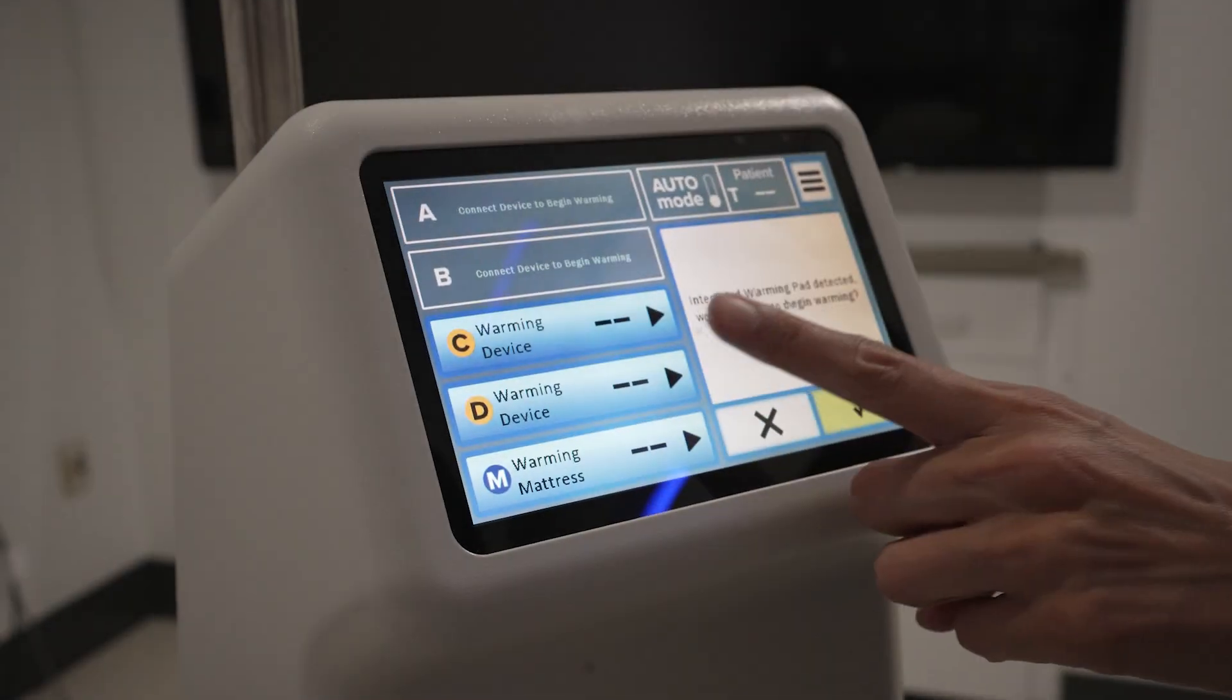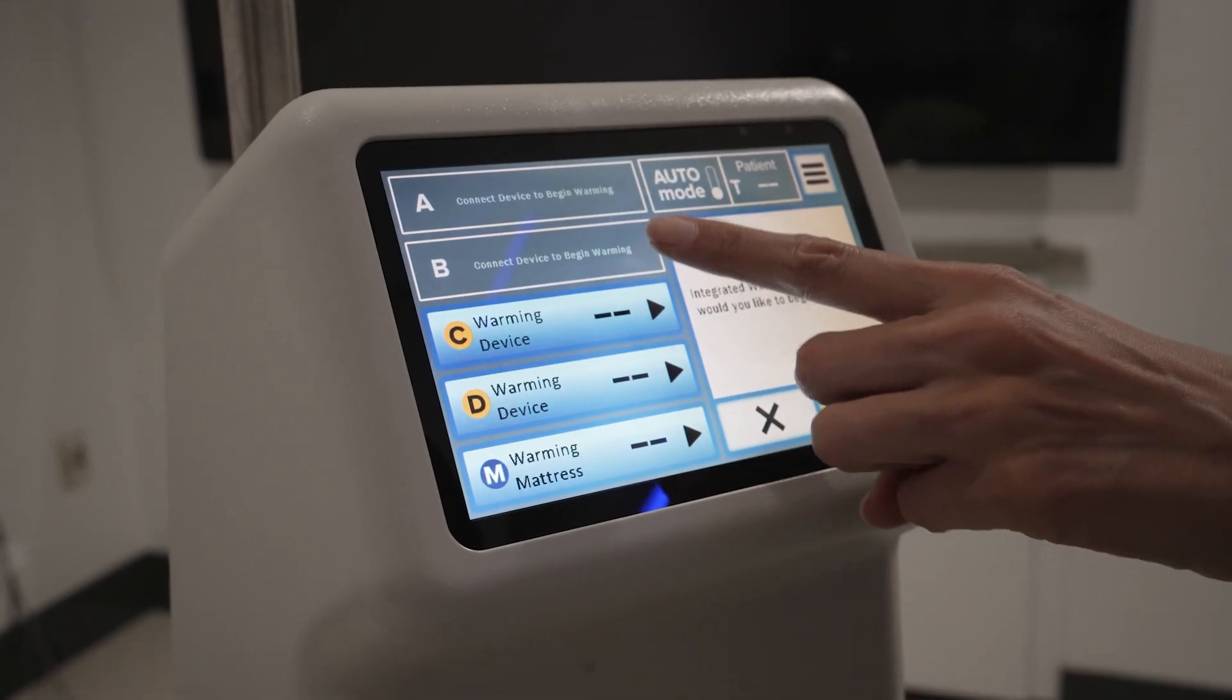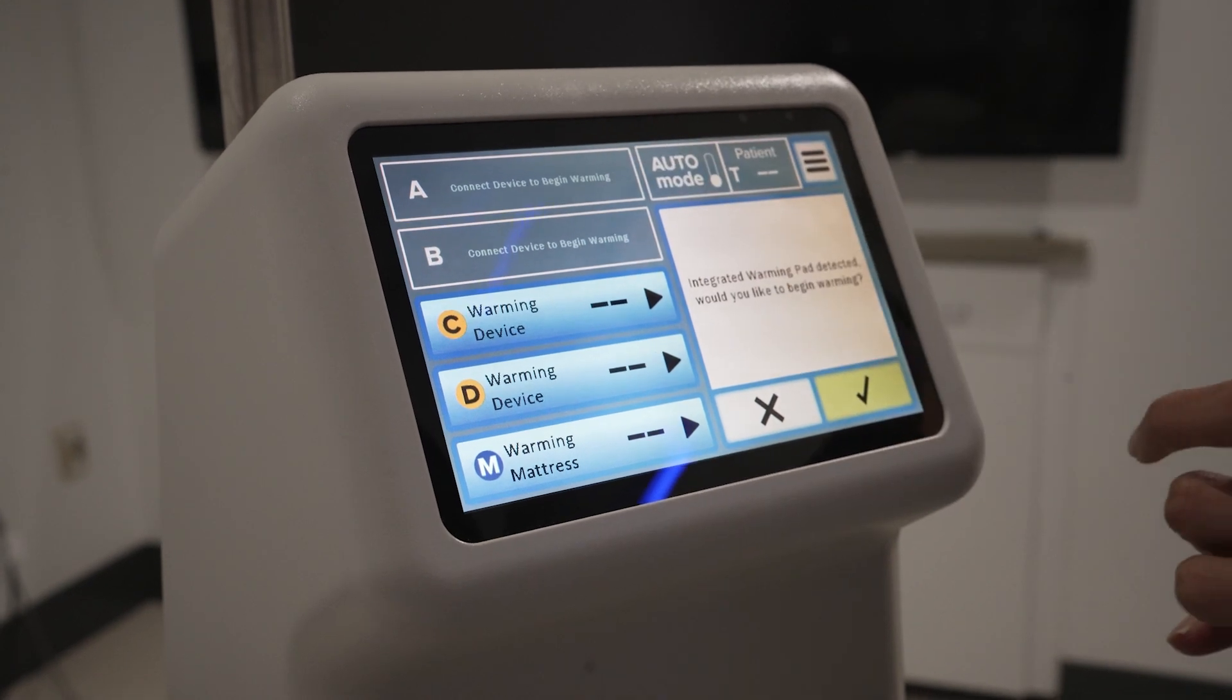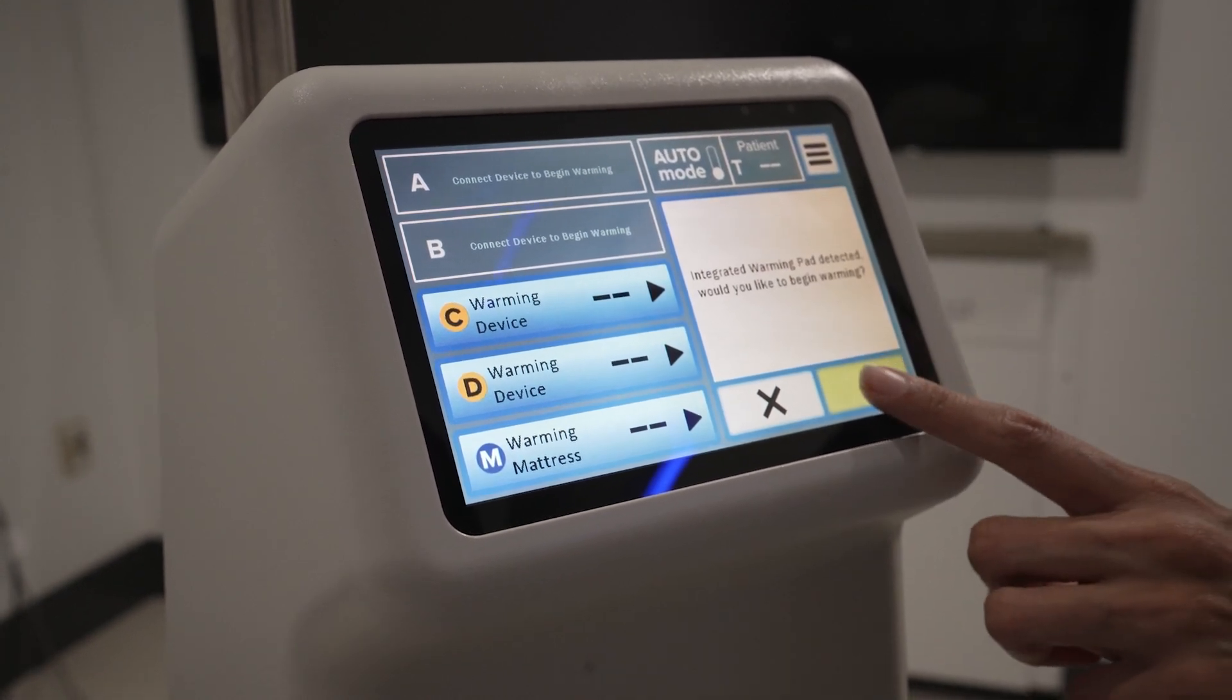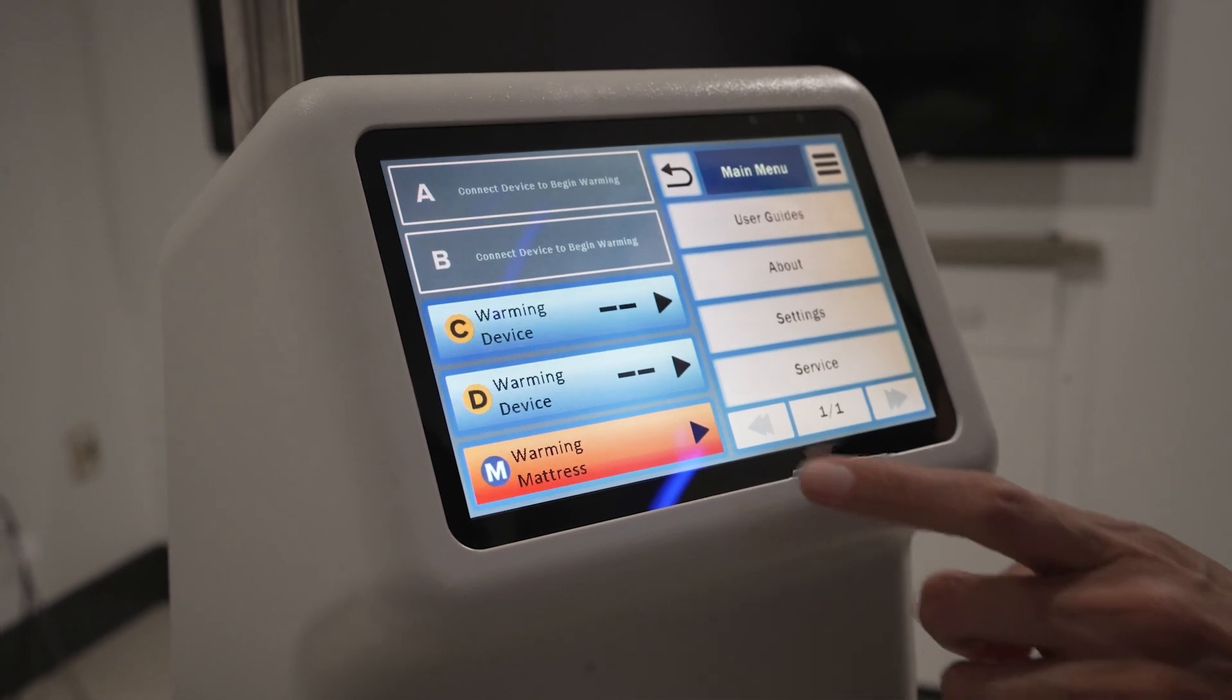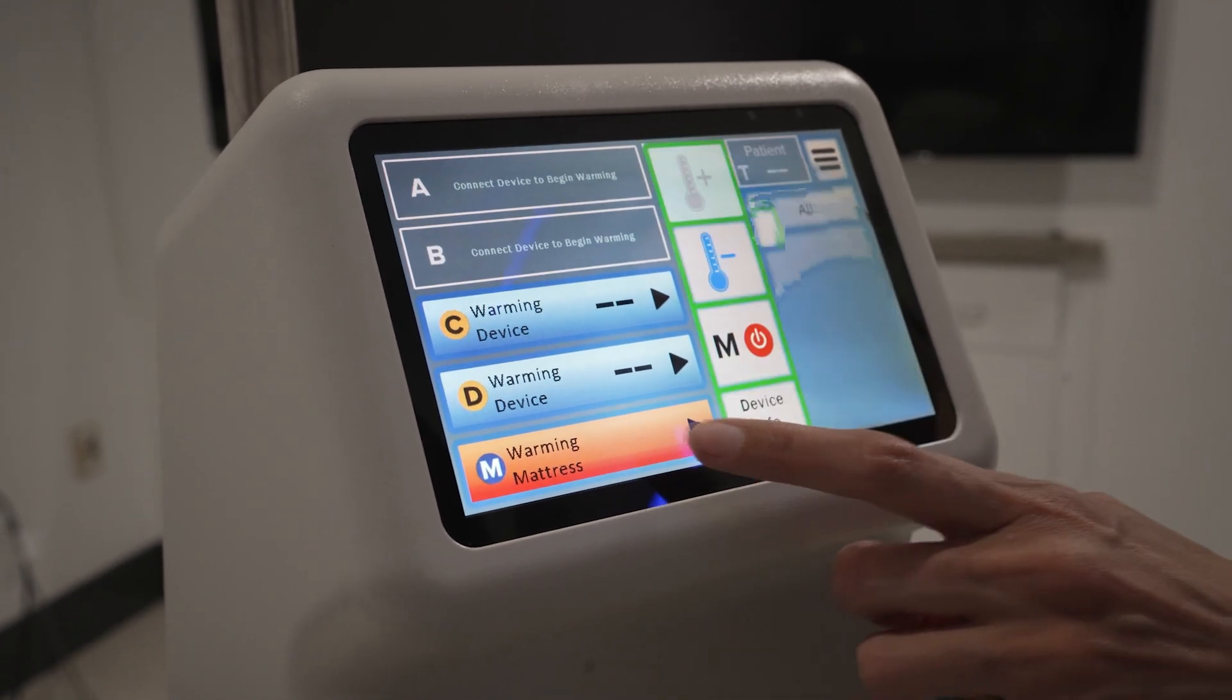The temperature management controller allows you to control the table pad and up to four additional blankets, individually or all at once. These temperatures can be adjusted in 1 degree Celsius increments.